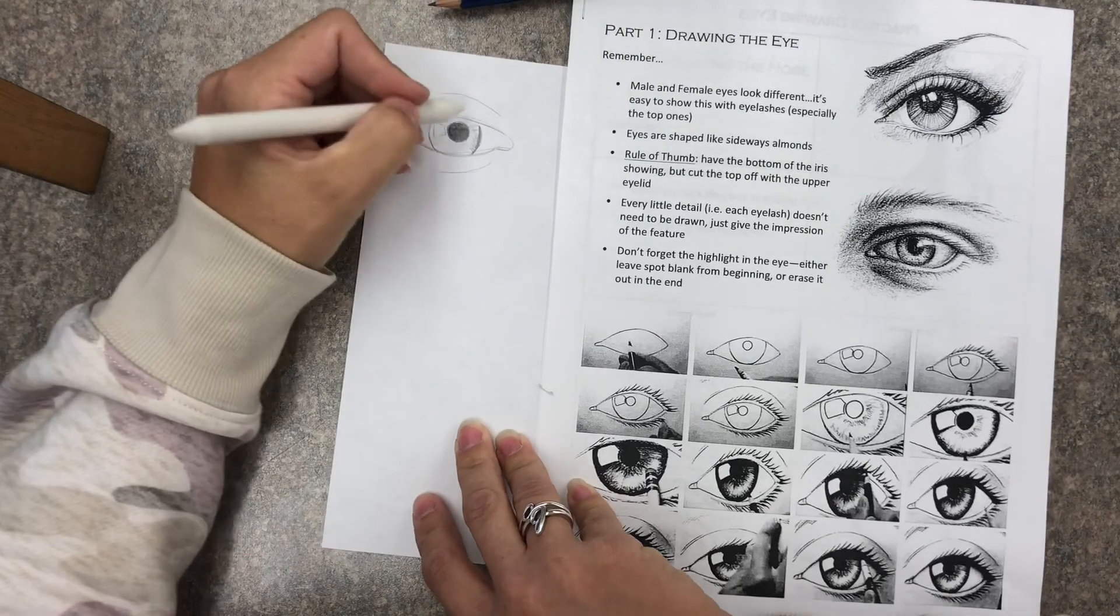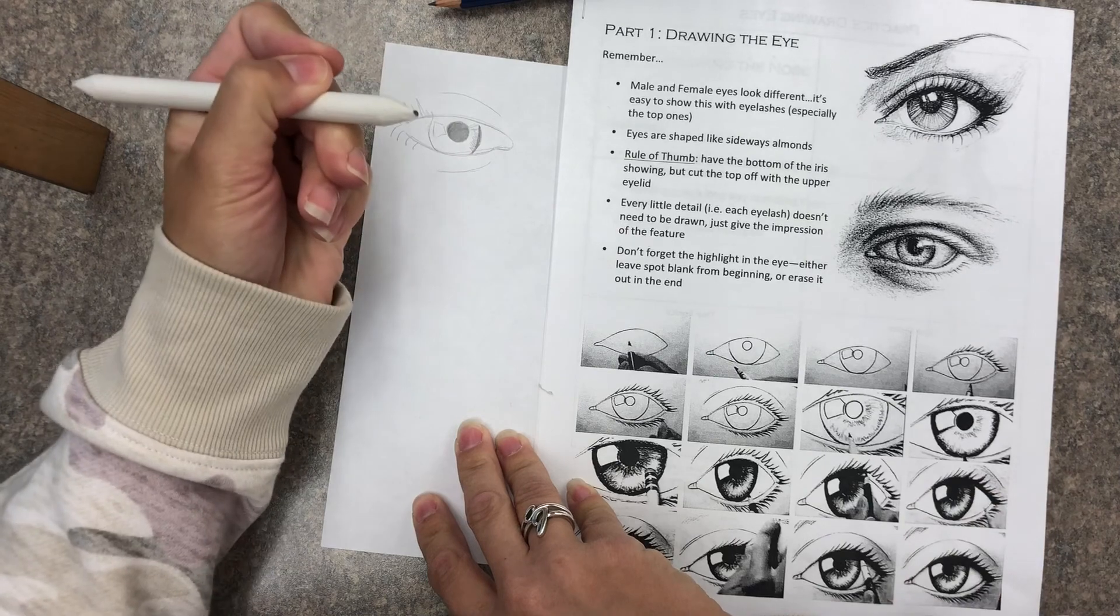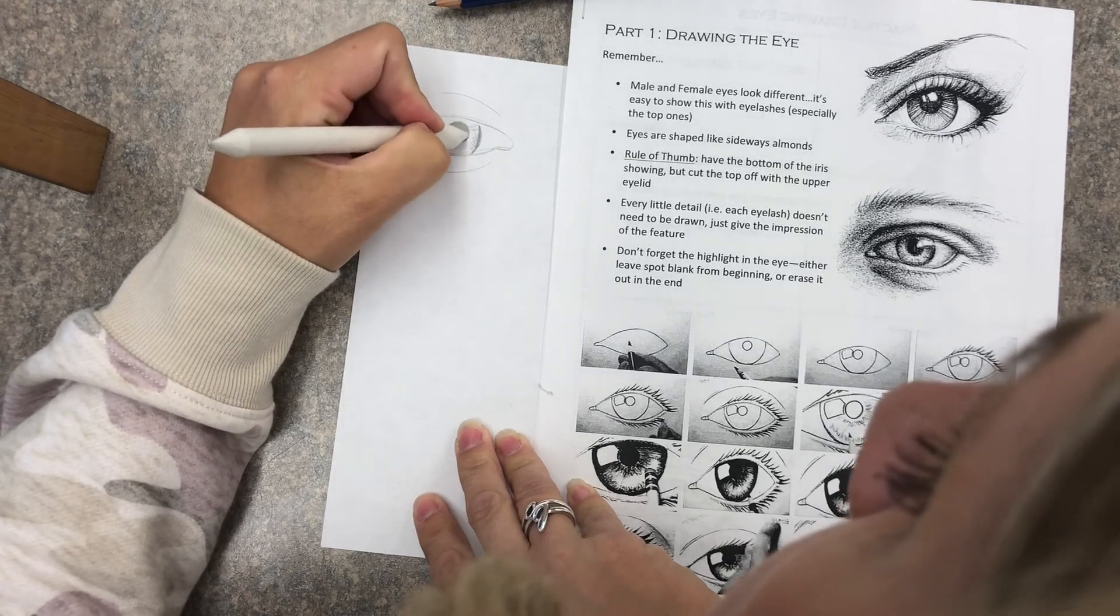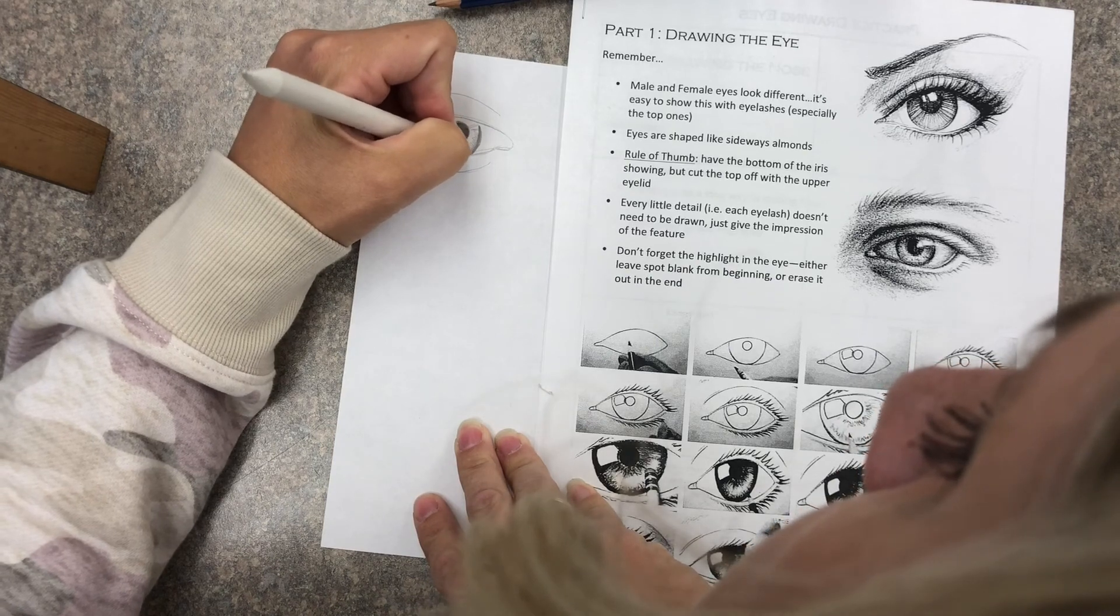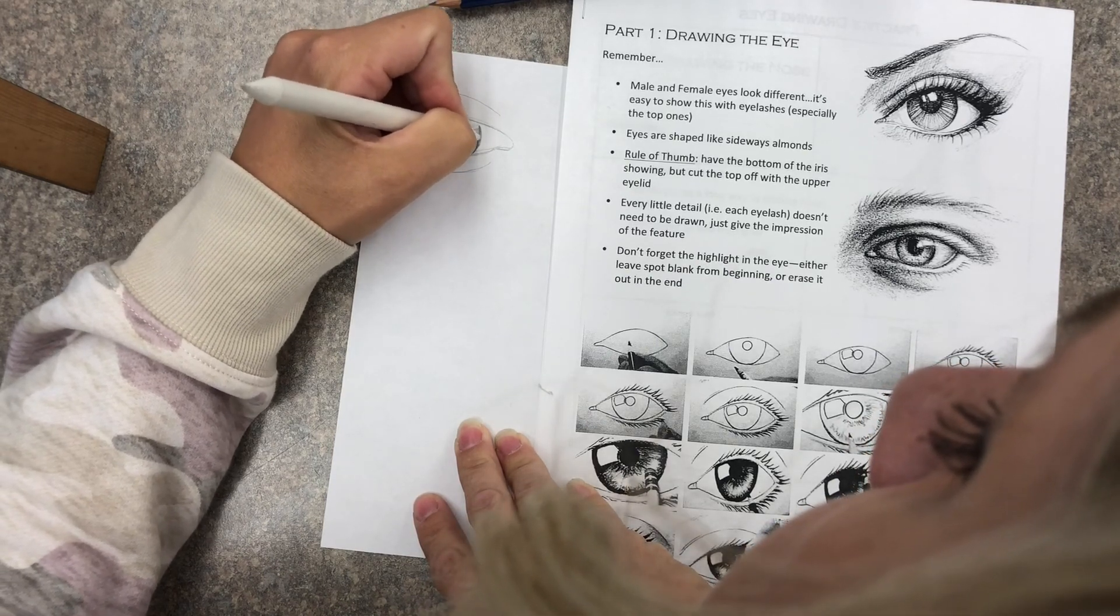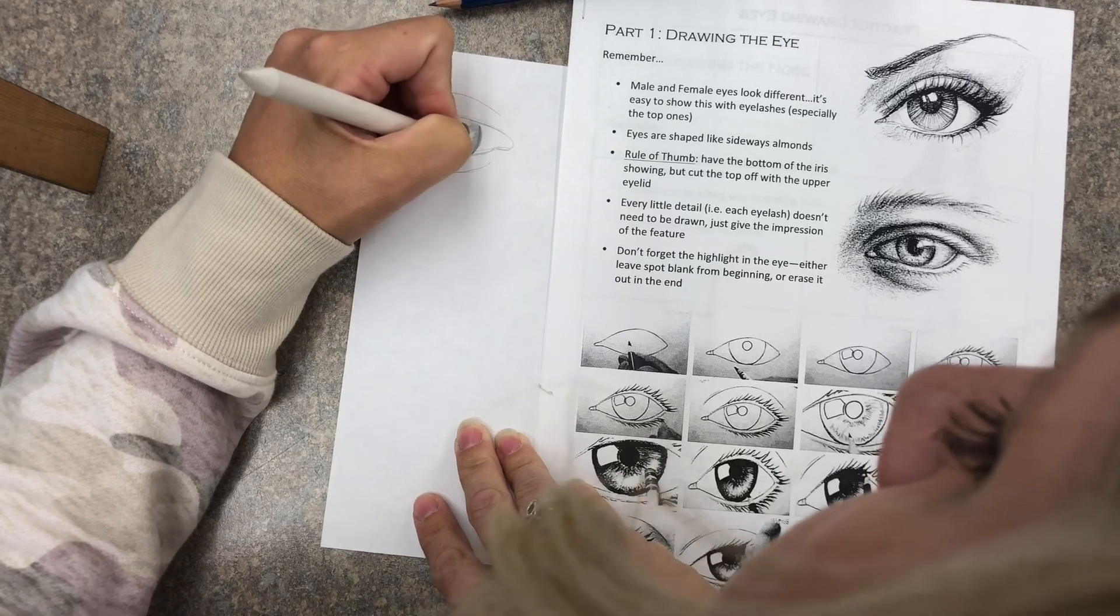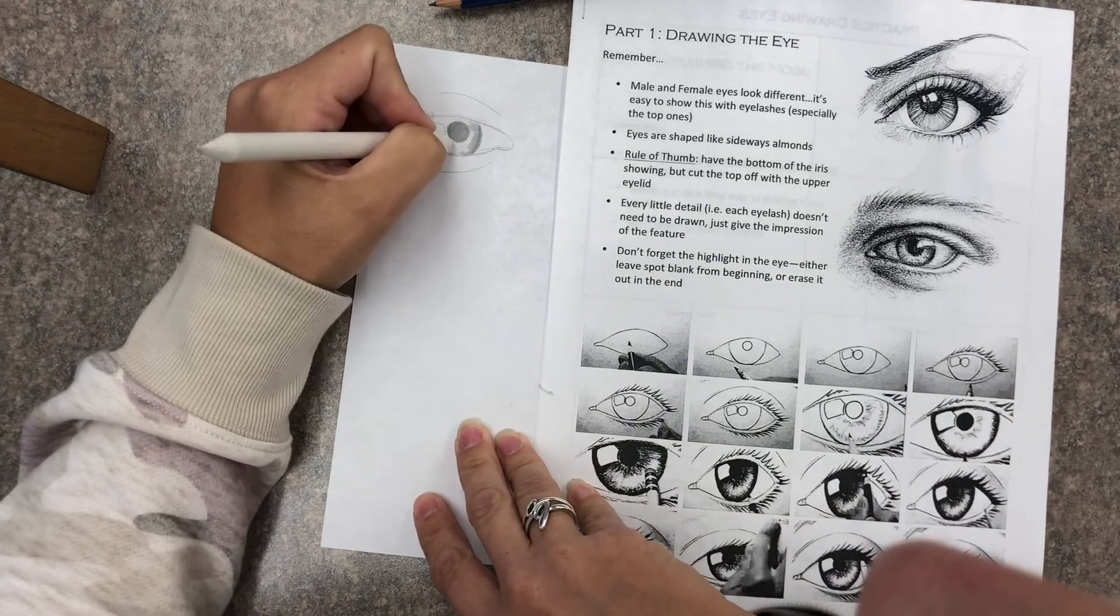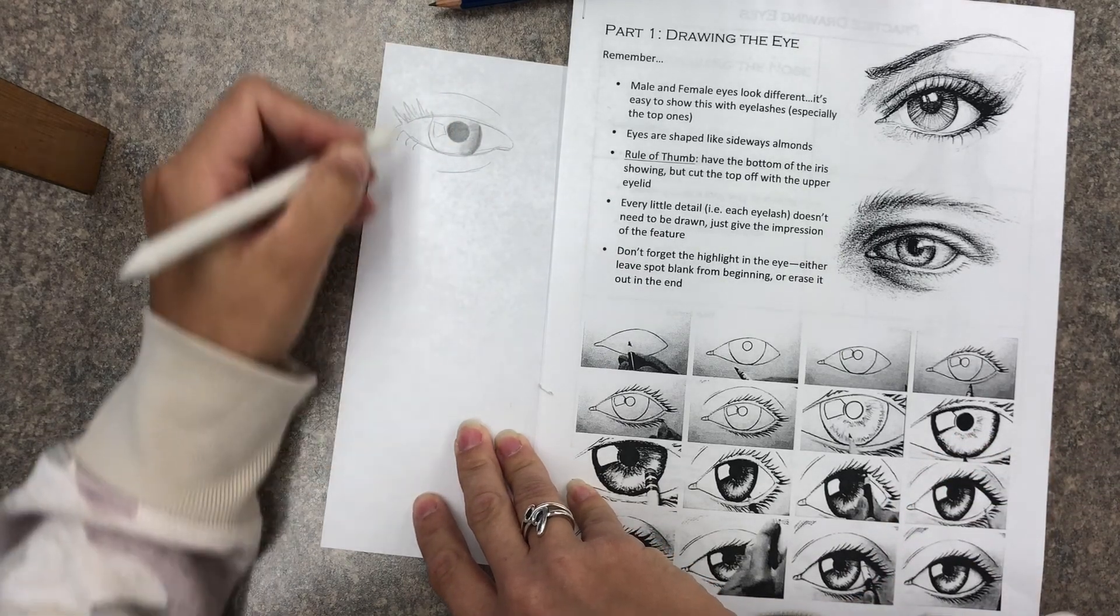And here's where you can use your blending stick. So your blending stick you're going to go back over. It is going to pick up some of the lead that you use but it's also going to smooth out some of these lines. So remember you're still going to see some of these pencil lines that you make but it's also going to shade it a little bit.